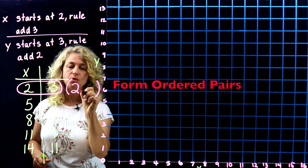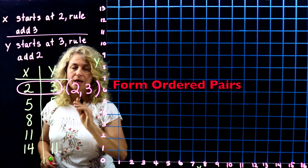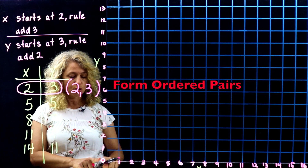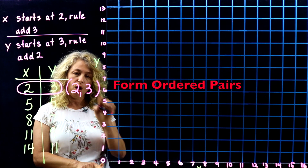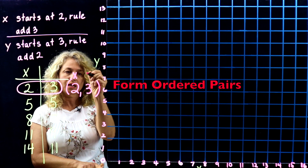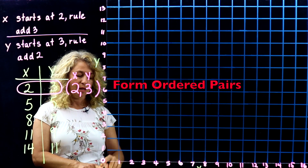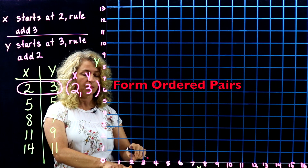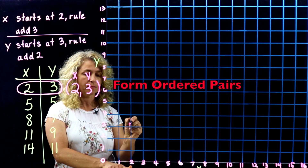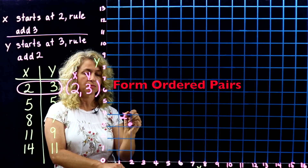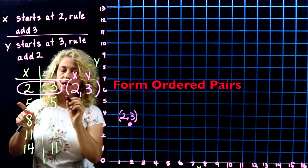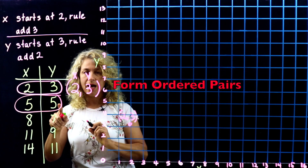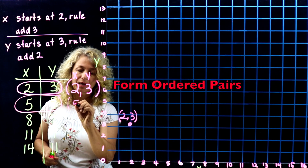The first ordered pair is (2, 3), which can be graphed. Start at the origin — X is always first, Y is second — go over 2 and up 3. There's our point (2, 3). The next corresponding terms are 5 and 5, giving ordered pair (5, 5).